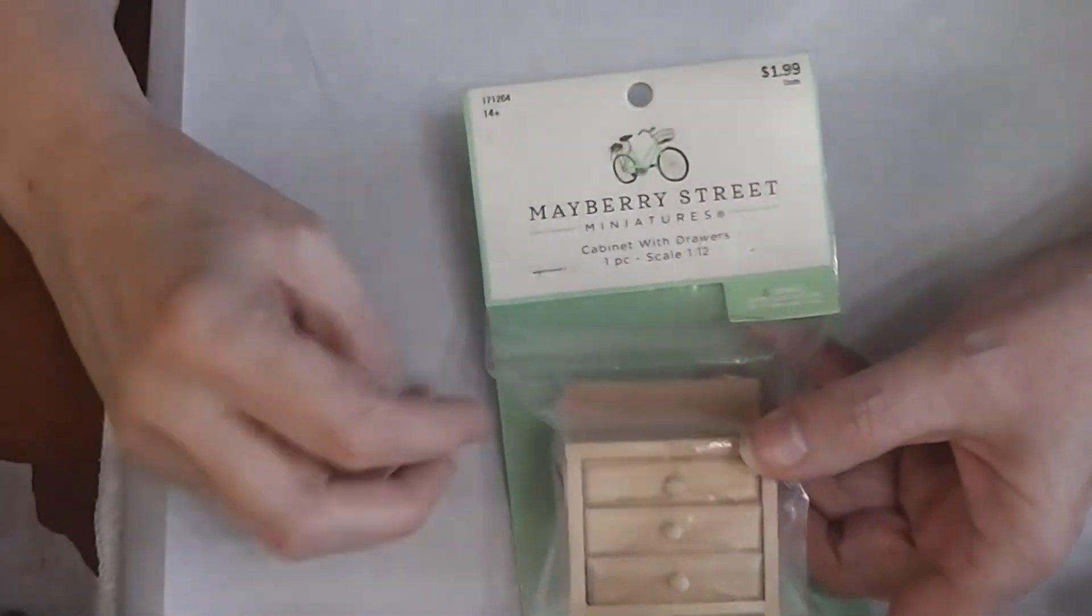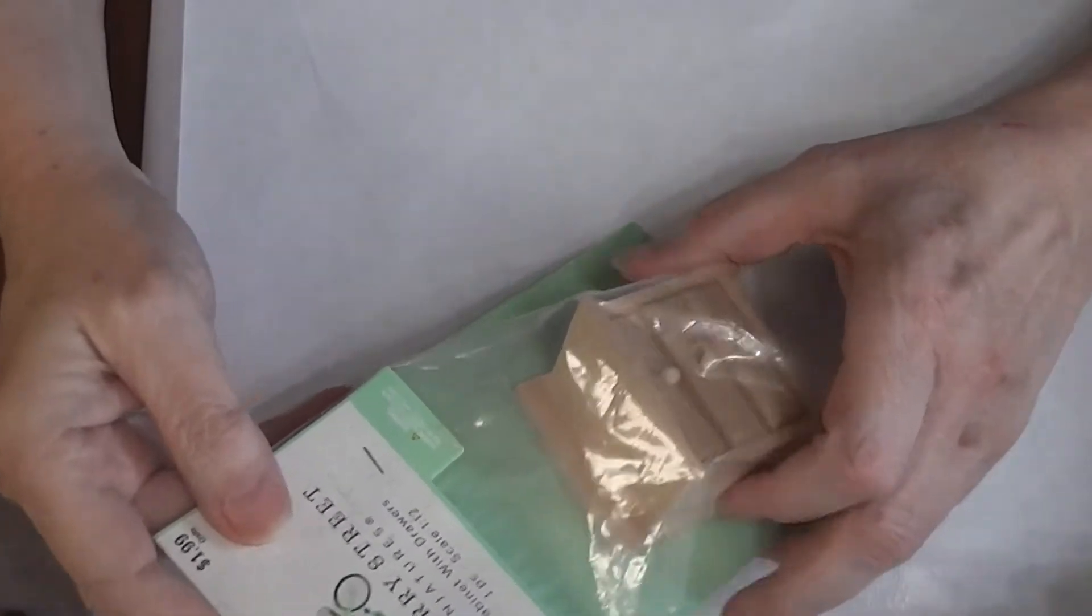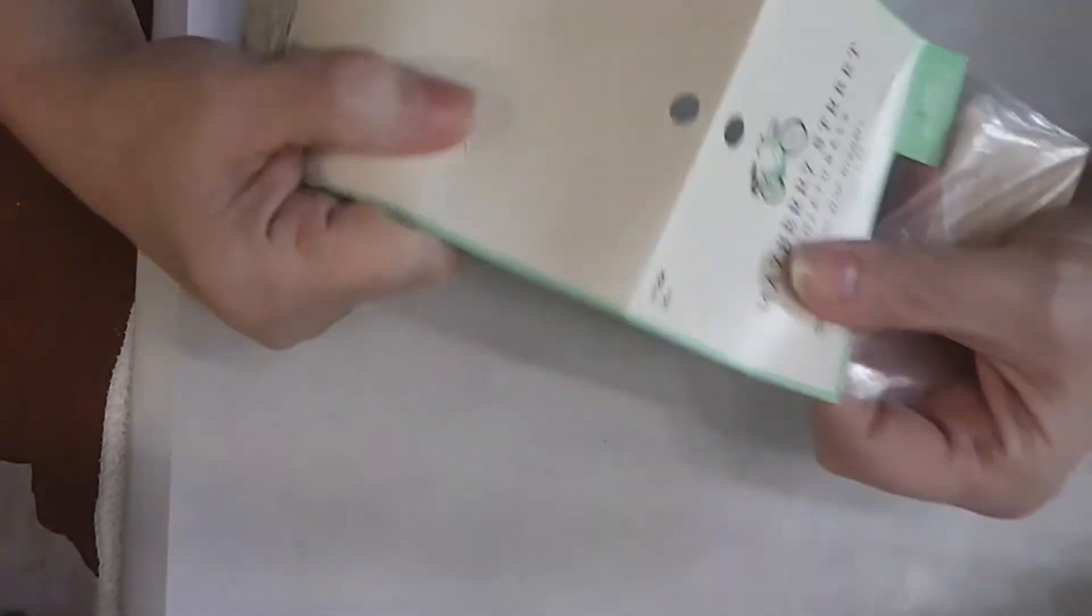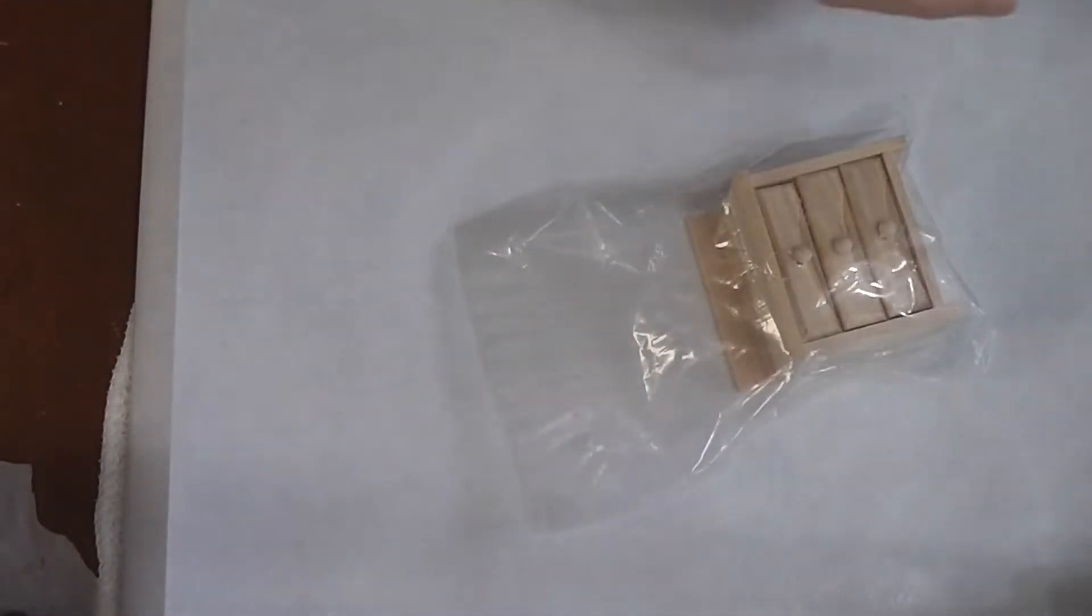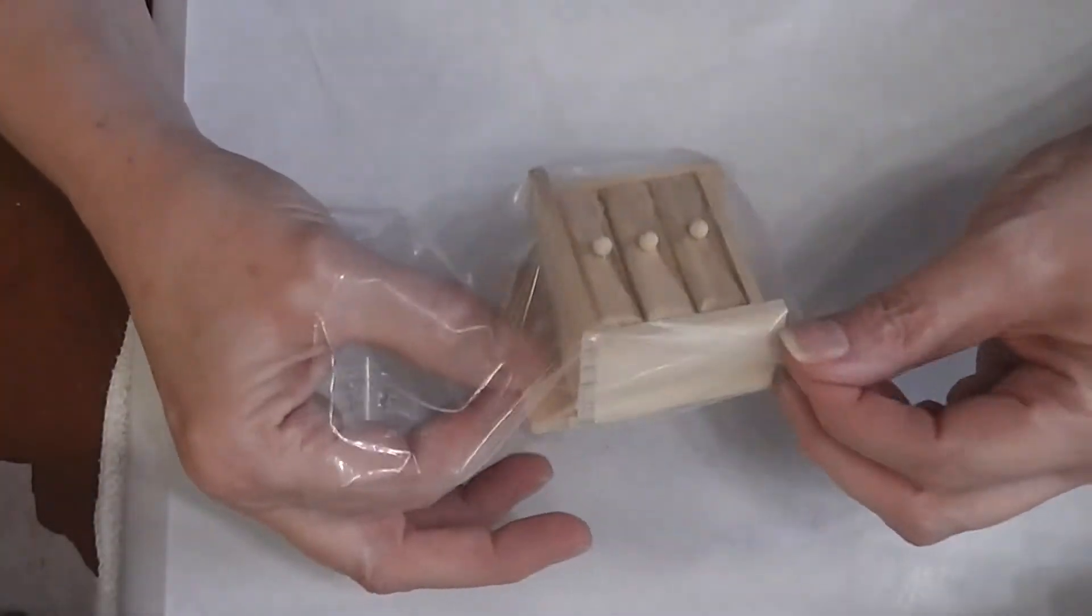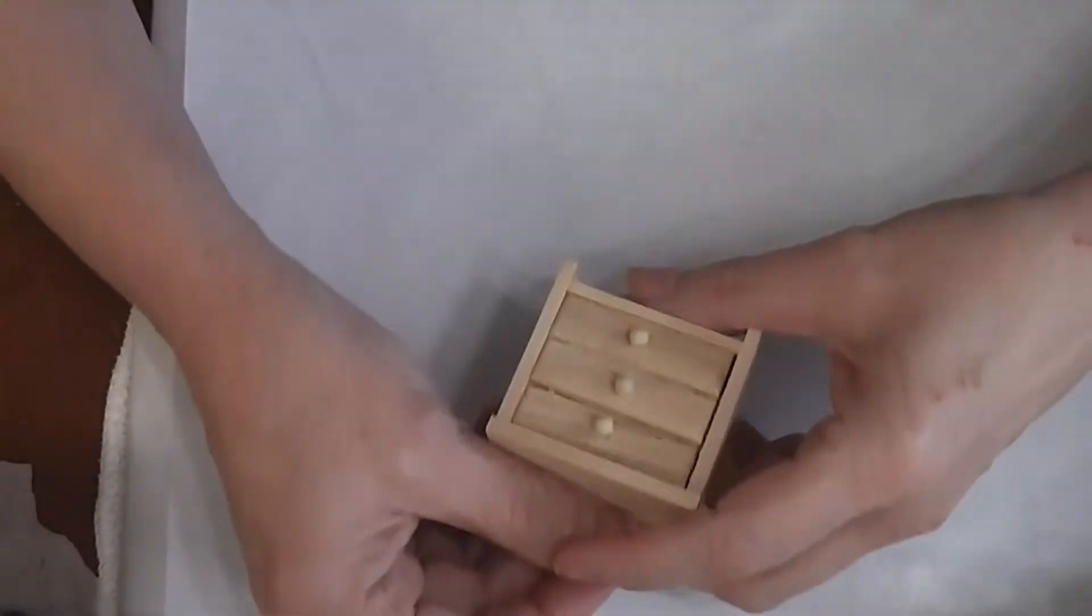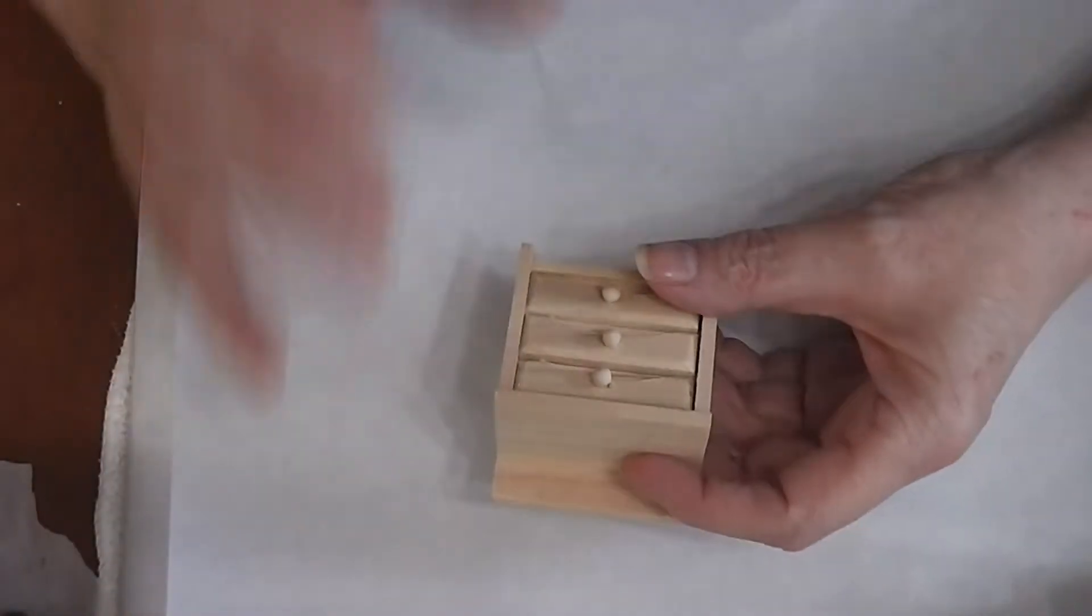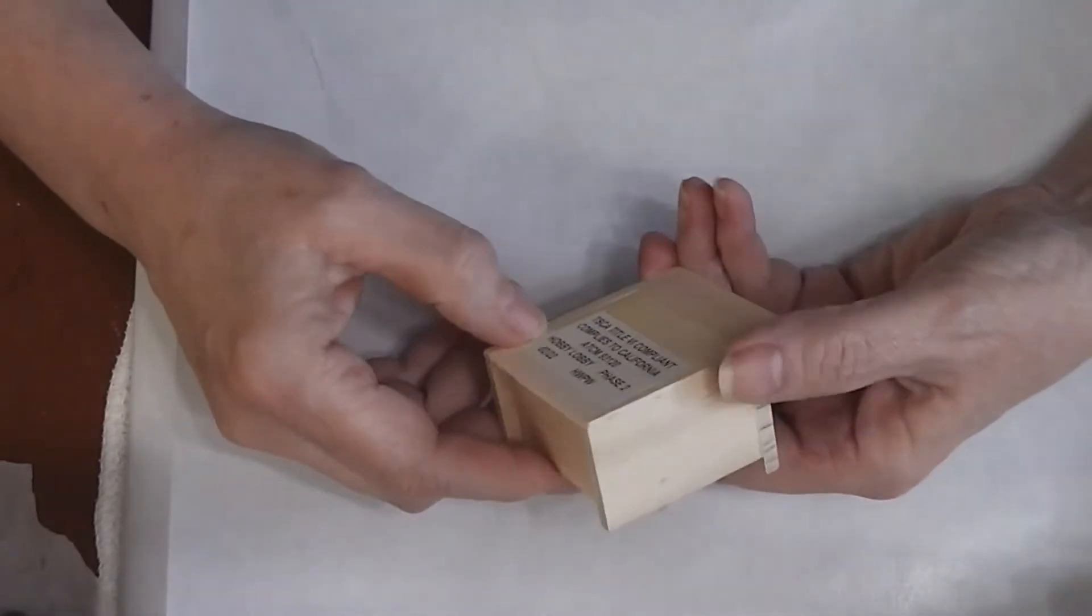Alright, so I recently picked up this little piece of Hobby Lobby dollhouse furniture. It's a little cabinet with drawers. I call it a nightstand probably. I thought we would play around with it on the channel. I know a lot of you have been using these in different projects and I wanted to see what it was like, what the quality was like. For a dollar ninety-nine, what's the quality like? Is it better than Dollar Tree? Is it about the same? How does it take paint and stain?